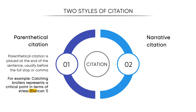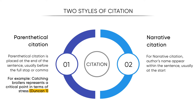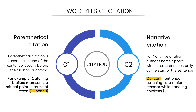Here, Duncan 1 is the parenthetical citation, where Duncan is the author of the paper and 1 is the page number. For narrative citation, the author's name appears within the sentence, usually at the start of the sentence as shown here, whereas the page number appears at the end of the sentence before the full stop.